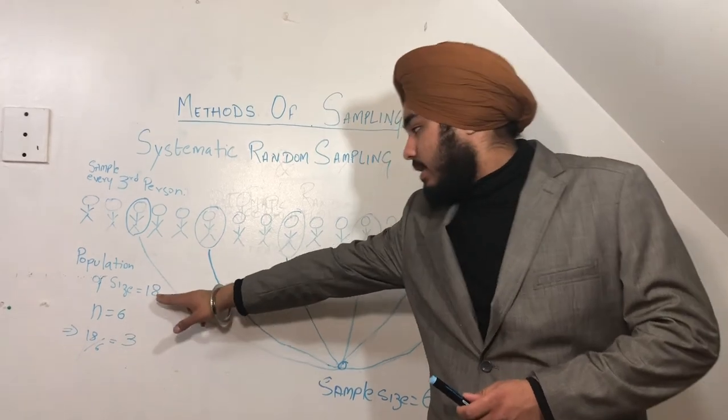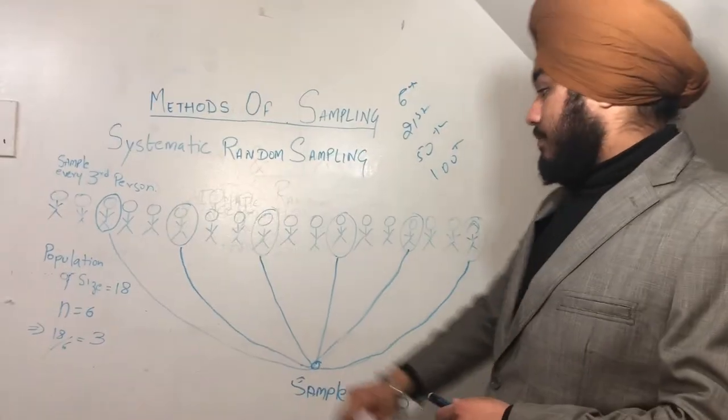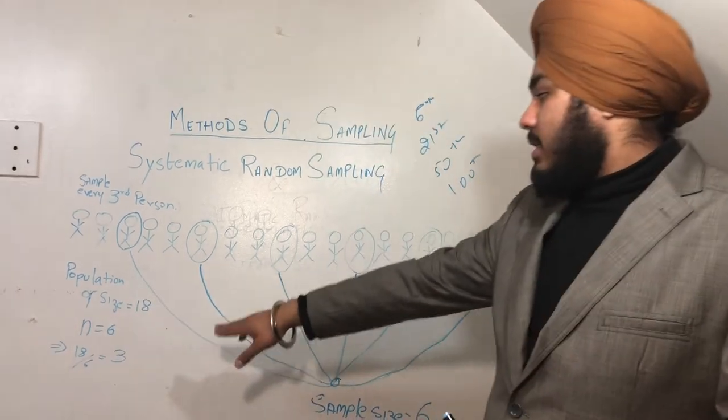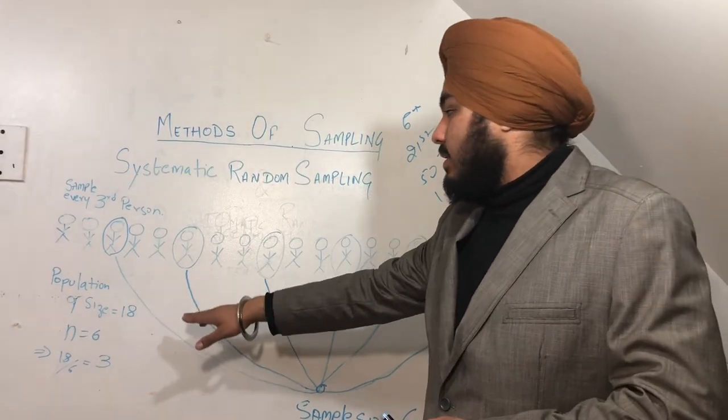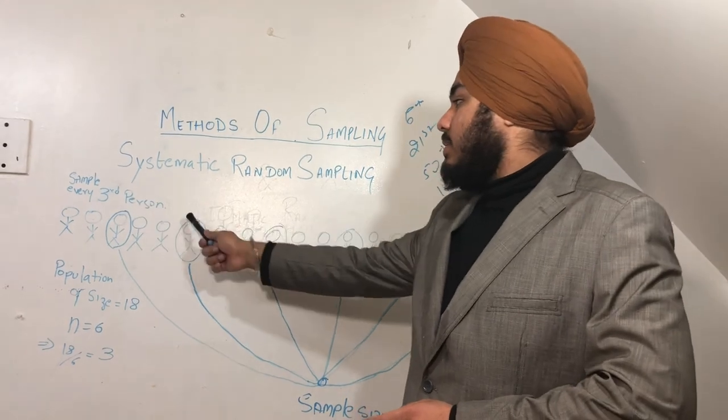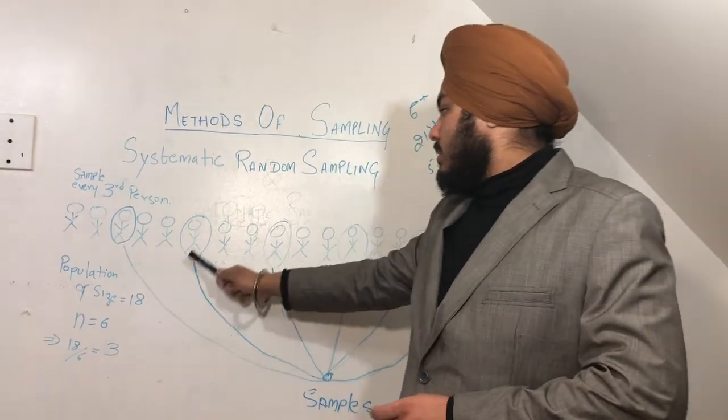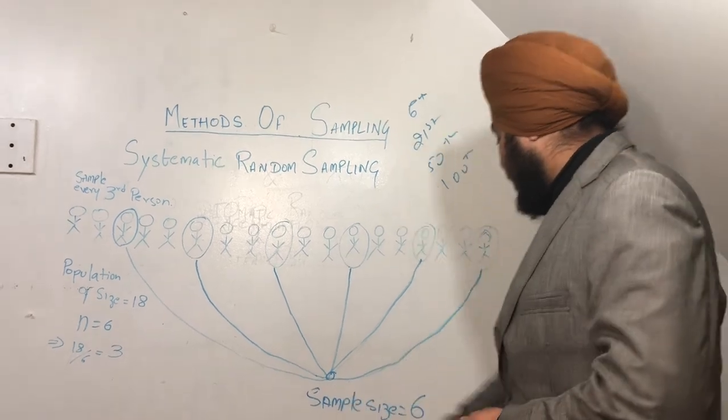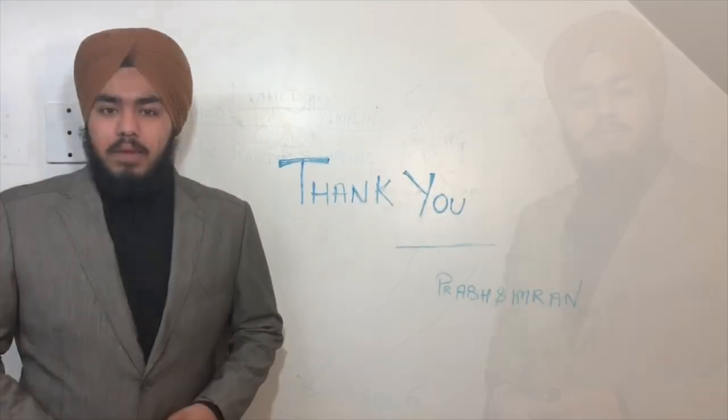The population size is 18 and my n is 6, so I picked the sample for every third person - third, sixth, ninth, twelfth, fifteenth - which makes a sample size of six.